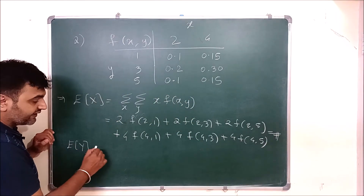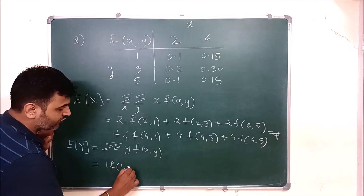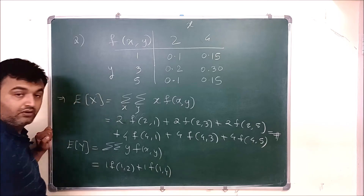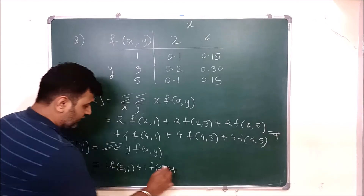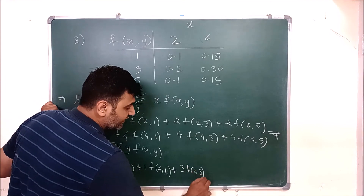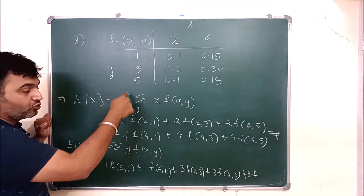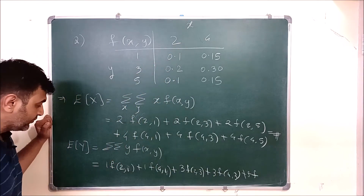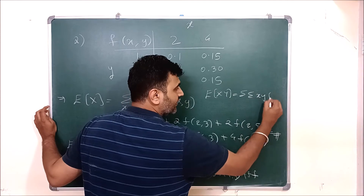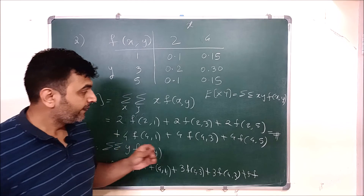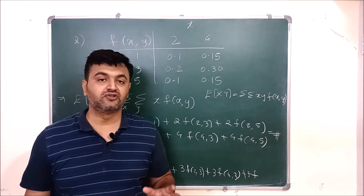Now find E[Y] — same approach: double summation of y·f(x,y). When y = 1: 1·f(2,1) + 1·f(4,1). When y = 3: 3·f(2,3) + 3·f(4,3). When y = 5: 5·f(2,5) + 5·f(4,5). You get E[Y]. Then find E[XY] as the double summation of xy·f(x,y), adding all 6 terms. Then E[XY] - E[X]·E[Y] gives Cov(X,Y).